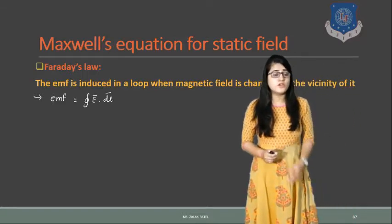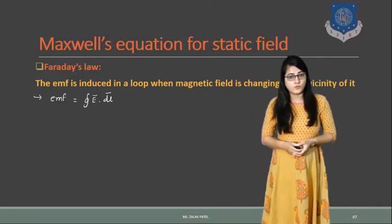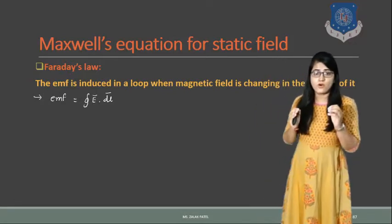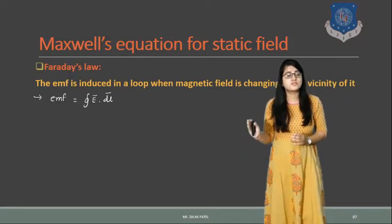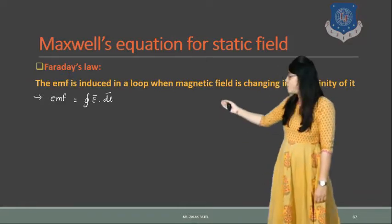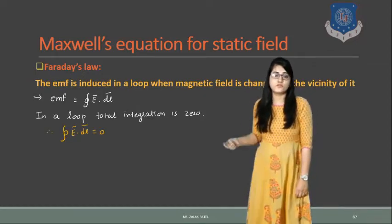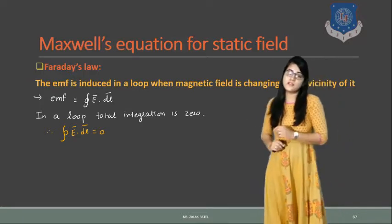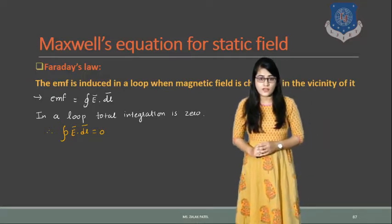We already saw in Unit 2 that for a closed path integration, since the path has the same initial and final limits, the integration of E dot dL becomes 0. So the EMF induced, that is the integral of E dot dL, is 0. We can say that the integration over the closed path of E dot dL equals 0. This is the integral form of Maxwell's equation for the static field.